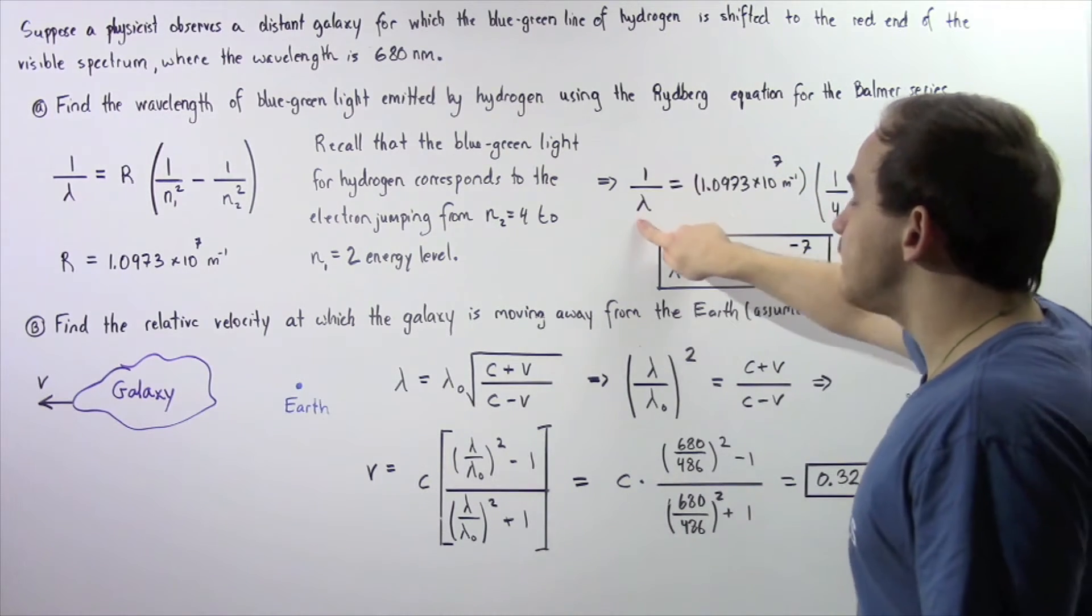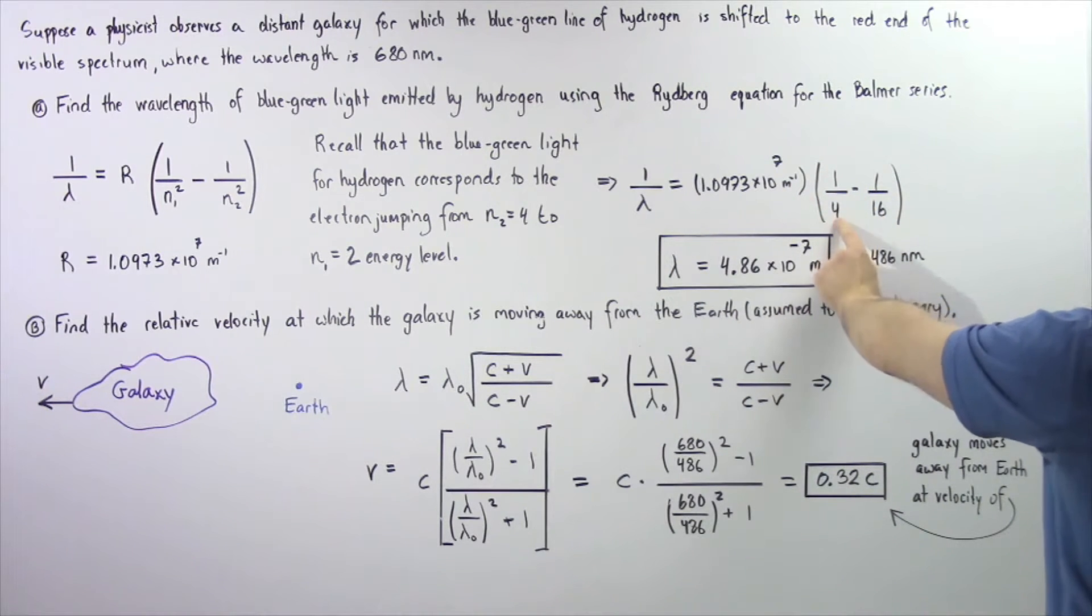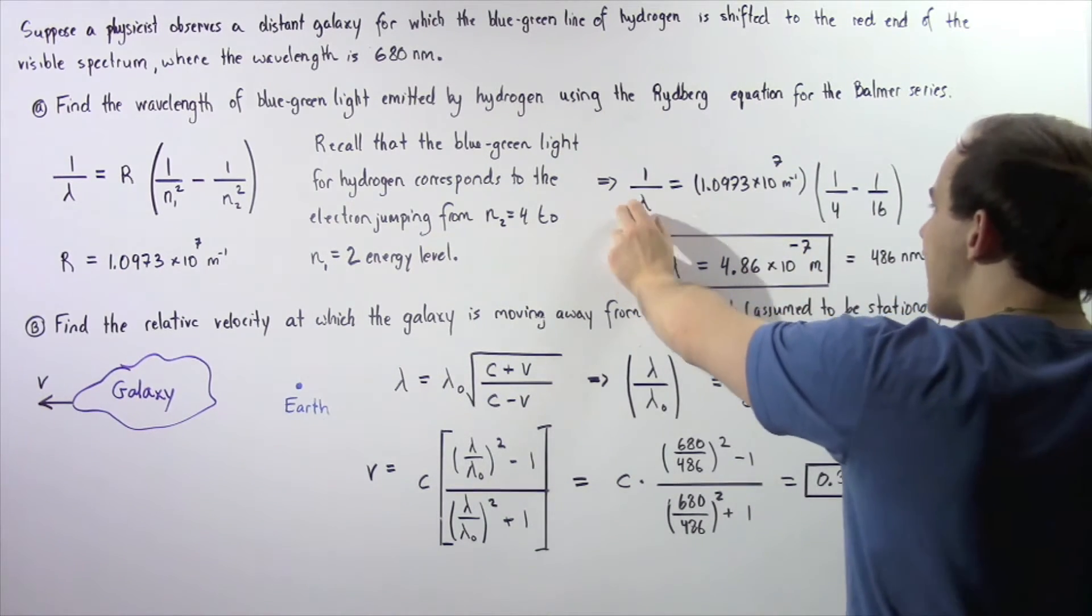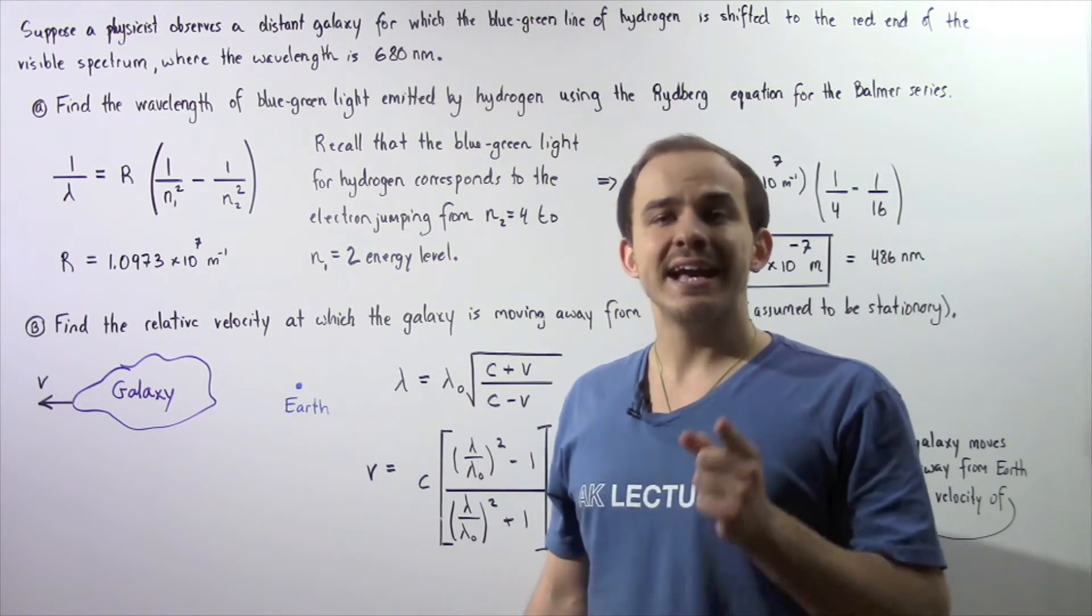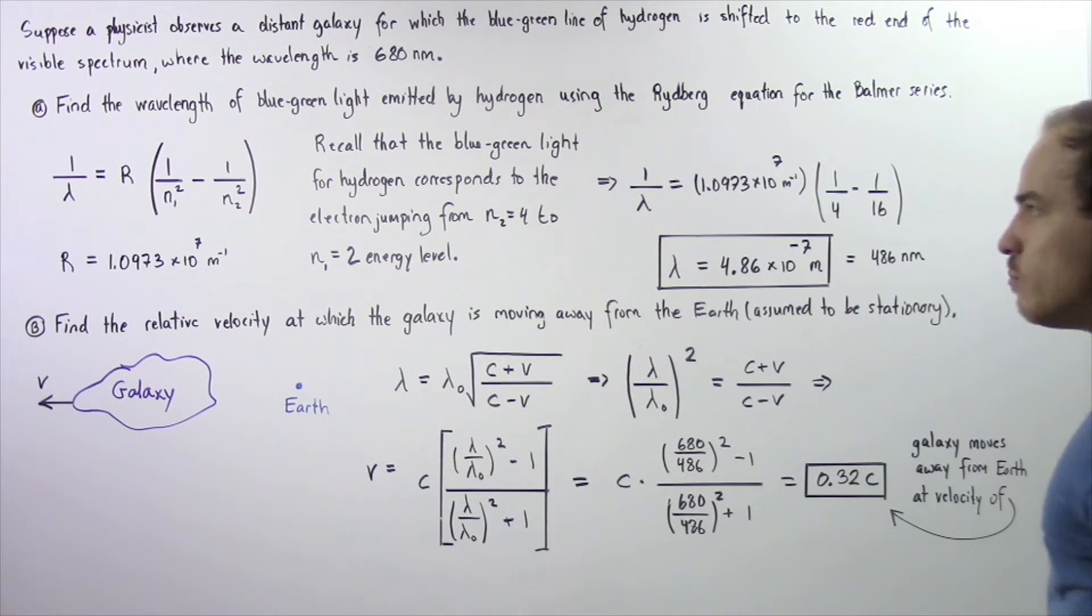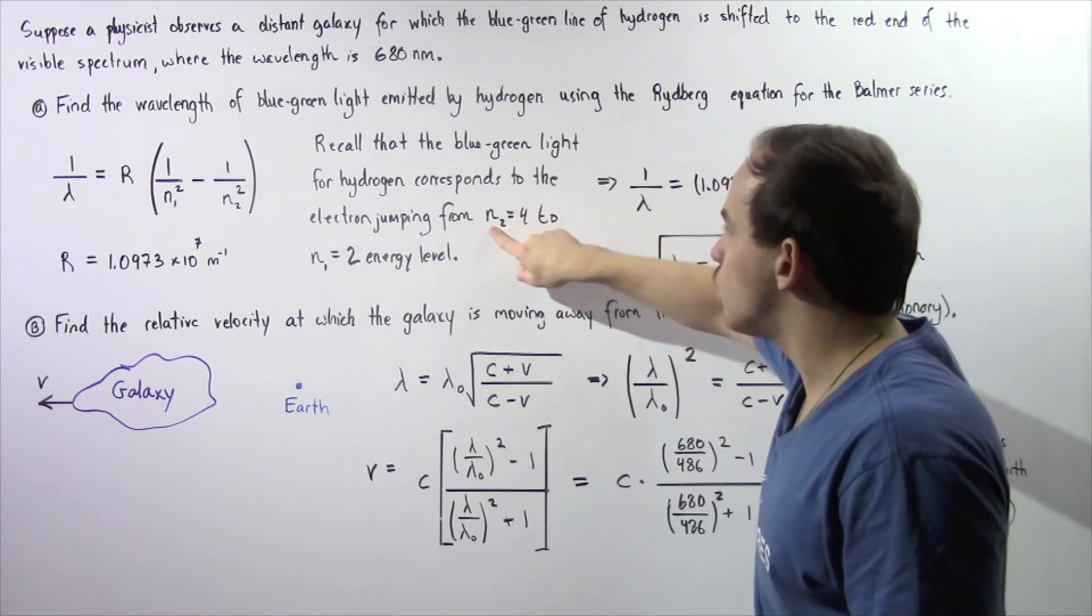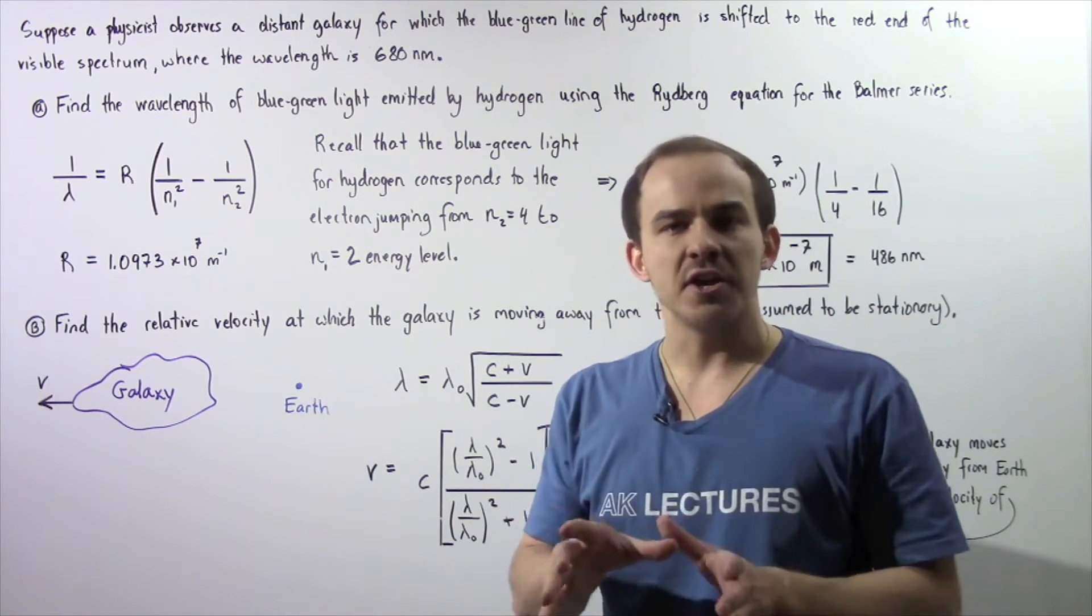So 1 divided by λ is equal to the Rydberg constant multiplied by 1 divided by 4 minus 1 divided by 16. We calculate this, multiply, and then solve for λ. λ is equal to 4.86 times 10 to the negative 7 meters, or equivalently 486 nanometers, the wavelength of the blue-green light emitted when the electron jumps from N equals 4 to N equals 2 as seen on the stationary Earth.